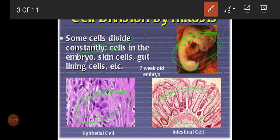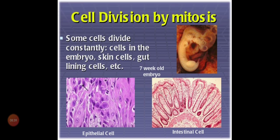Skin cells — we call them epithelial cells — also continuously divide. And the inner lining layer of our intestine, called intestinal cells, also divides every day. These three — embryo cells, skin or epithelial cells, and intestinal cells — continuously divide every day. If this division occurs, every day we will get new cells. So constantly in our body, some cells divide continuously by mitosis — a cell divides and gives rise to two new cells.